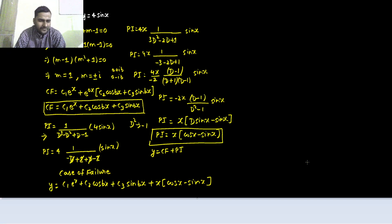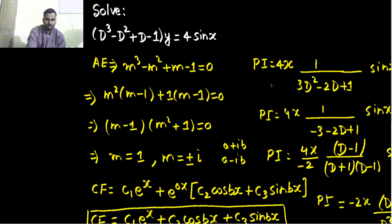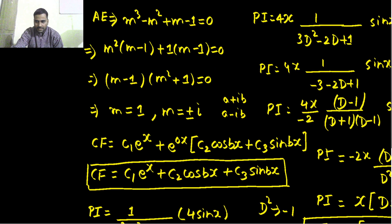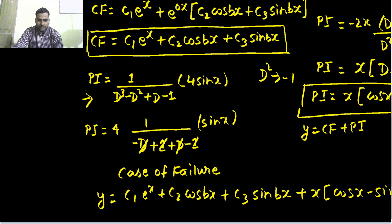So to summarize we first found the auxiliary equation, solved it, we got 3 roots: 1, +i and -i. For real and distinct we have c₁e^x, for complex we have e^(0x)[c₂ cos bx + c₃ sin bx]. That b is there as 1 so why am I writing bx, that should be 1 in place of b.